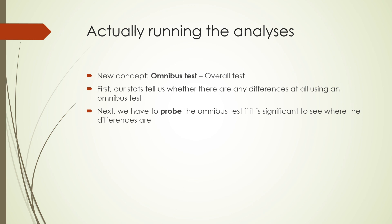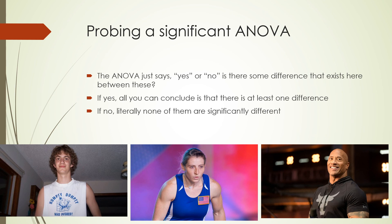When we probe the omnibus test, we actually compare: is there a difference between the affirmation and the backlash condition? Is there a difference between the backlash and the affirmation condition? And is there a difference between each of those and the control condition? The ANOVA just says yes or no — is there some difference between these groups? If yes, all you can conclude is that there is at least one difference. If no, literally none of them are significant.